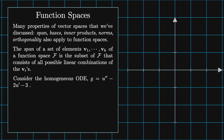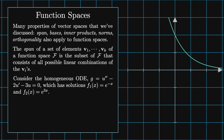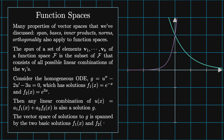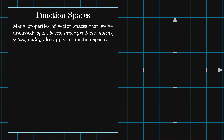Consider the homogeneous ordinary differential equation g equals u double prime minus 2u prime minus 3u equals zero. This has solutions f1 of x equals e to the minus x and f2 of x equals e to the 3x. Then any linear combination u of x equals a1 times f1 of x plus a2 times f2 of x is also a solution to g. Thus the function space of solutions to g is spanned by the two basic solutions f1 of x and f2 of x.